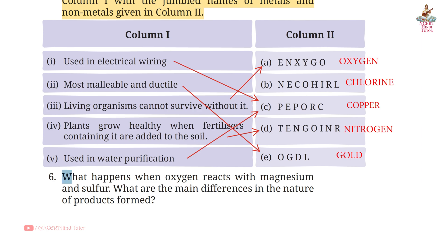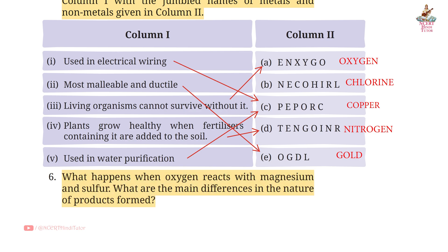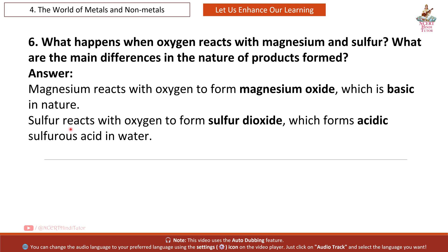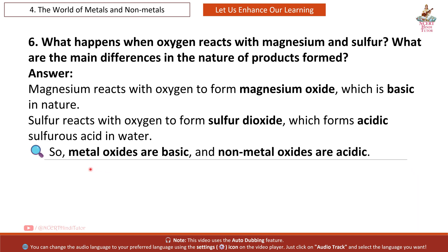Question 6: What happens when oxygen reacts with magnesium and sulfur? Magnesium reacts with oxygen to form magnesium oxide, which is basic in nature. Sulfur reacts with oxygen to form sulfur dioxide, which forms acidic sulfurous acid in water. So metal oxides are basic and non-metal oxides are acidic.